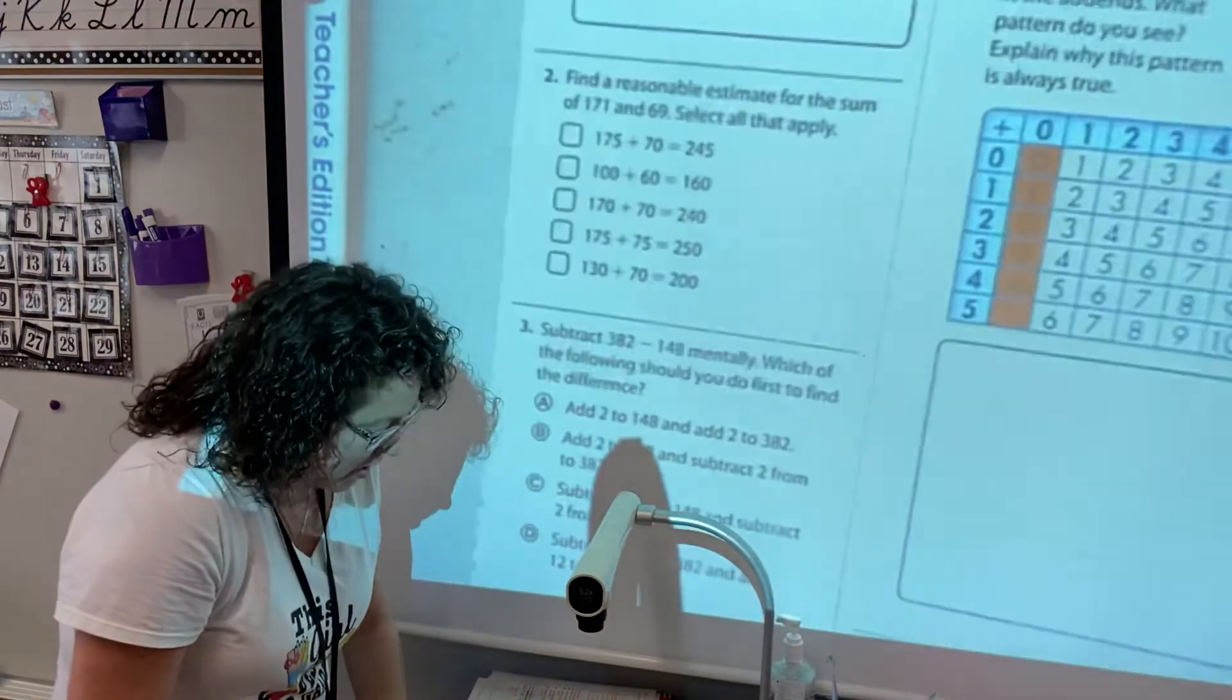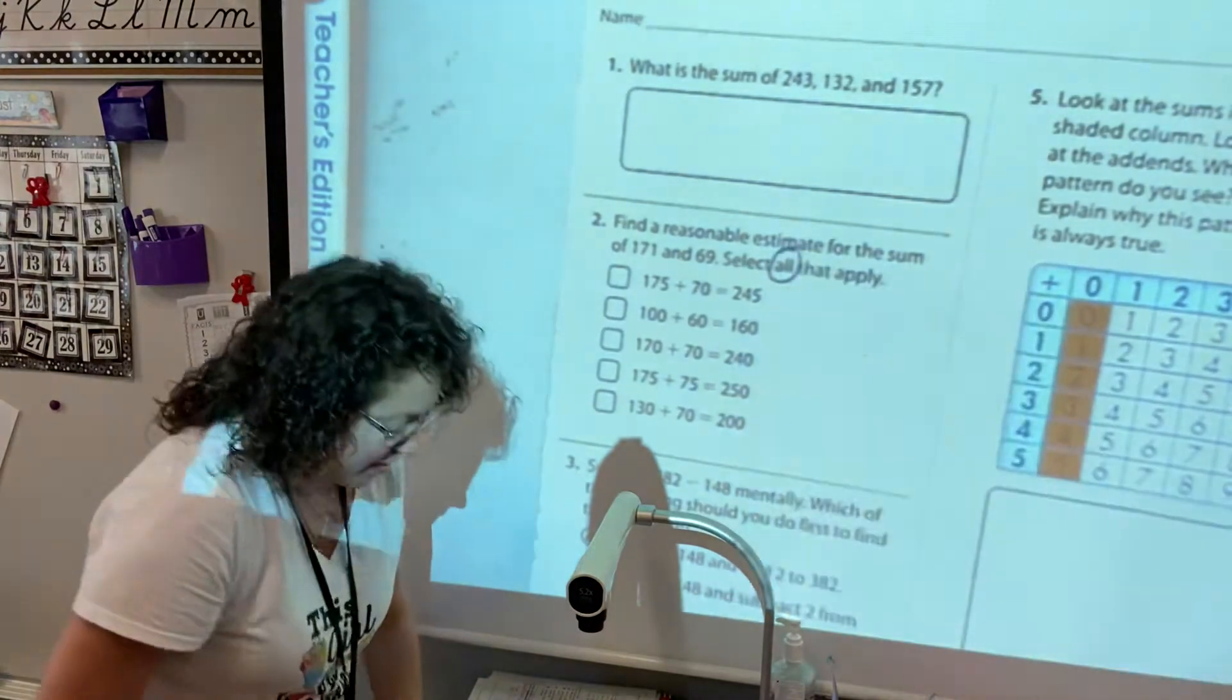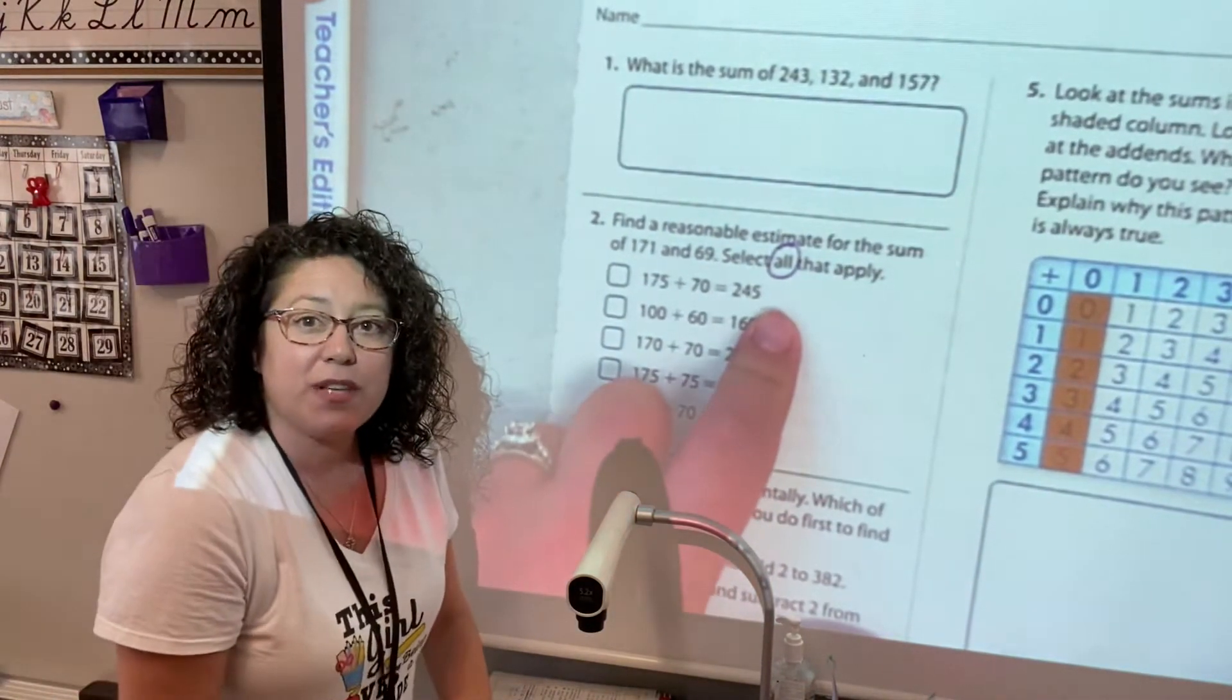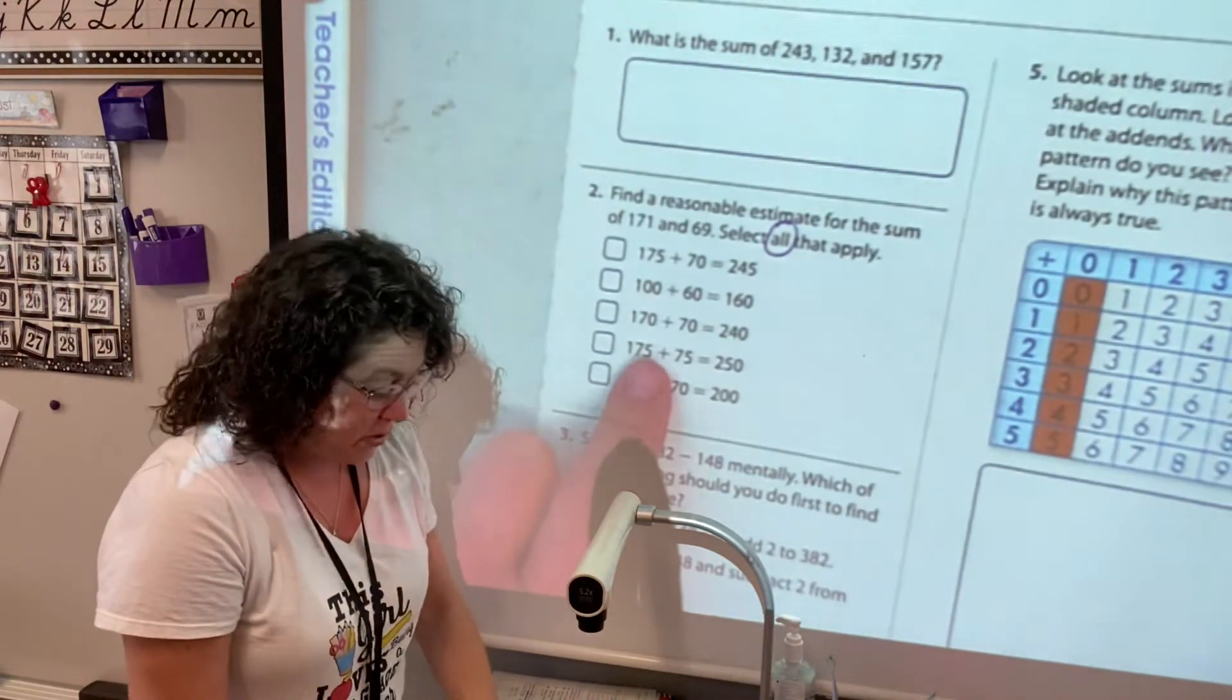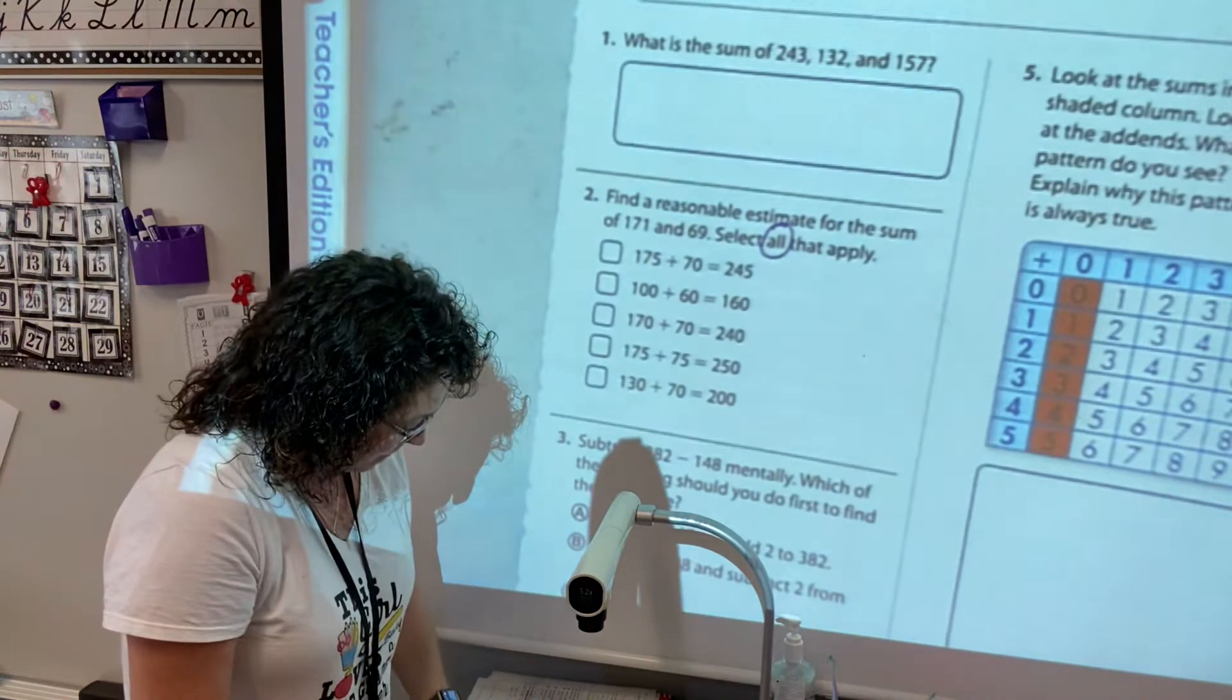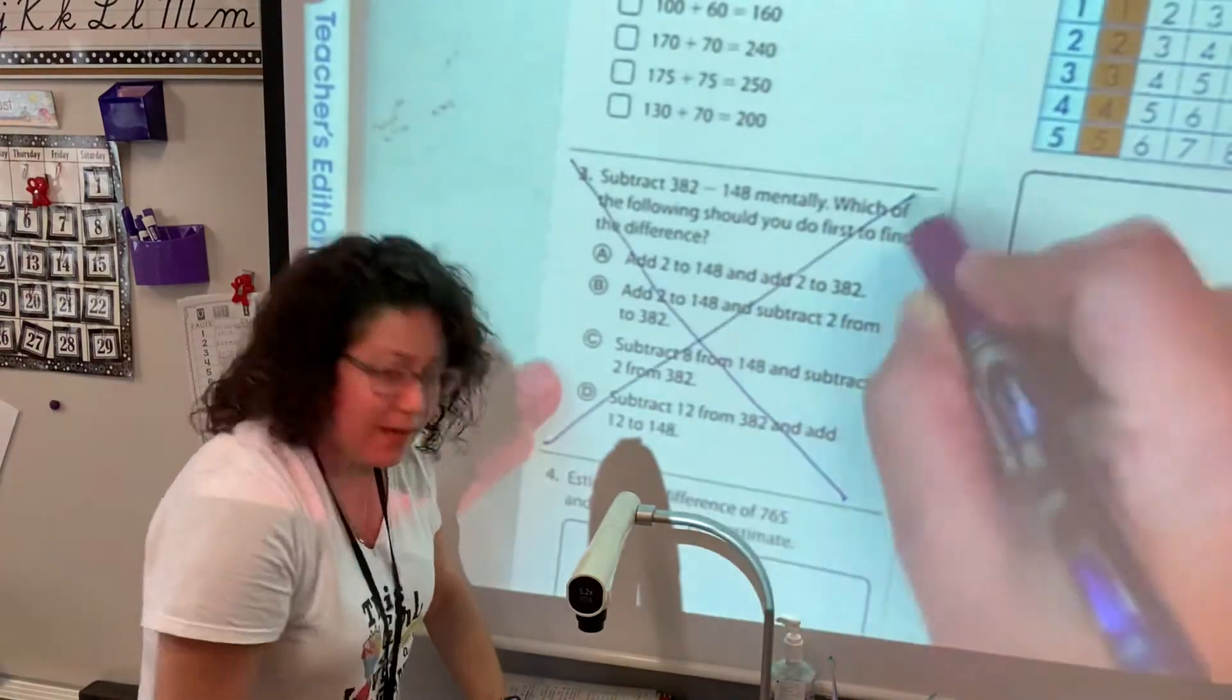So number one is good. Number two, it says select all that apply. I'm not sure if you saw some of those kind of questions in second grade, but when you see select all, it always means there's more than one, so you're gonna have more than one box checked here, okay. We're gonna mark off number three, so you don't have to do number three.